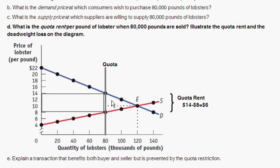The deadweight loss of this market is equivalent to the triangle from point E down to where the quota meets the supply price, up to where the quota meets the demand price. This area represents the amount of value lost in this market due to the quota. If the market were allowed to go to equilibrium, this additional value would go to producers and demanders, but the quota causes it to be lost.